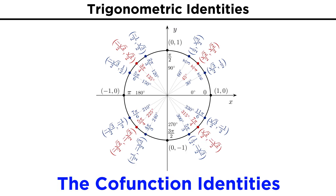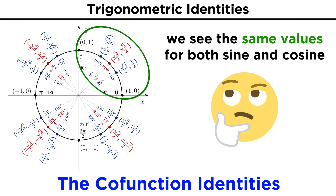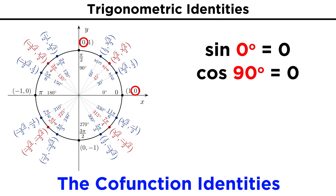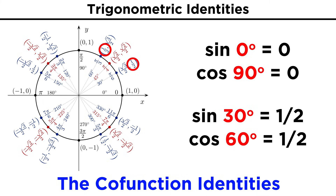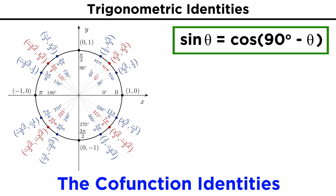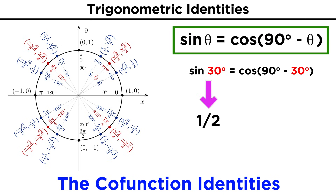Next we want to understand the cofunction identities. Let's go back to the unit circle. Looking at the first quadrant, we see that the same values are used for the x and y coordinates, just in reverse order. In other words, the sine of zero is the cosine of 90, and the sine of 30 is the cosine of 60. This continues all the way through the quadrant. For this reason, we can say that sine of theta is equal to the cosine of 90 minus theta. For example, the sine of 30 is one half, and that's also equal to the cosine of 90 minus 30, or the cosine of 60. So this is a relationship that occurs between any pair of complementary angles.